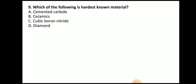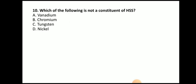Next question: which of the following is the hardest known material? The answer is diamond. Diamond is the hardest material out of cemented carbide, ceramic, and cubic boron nitride. The last question: which of the following is not a constituent of HSS? The answer is nickel — nickel is not a constituent of high speed steel.